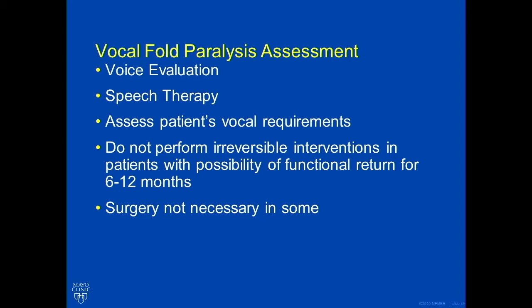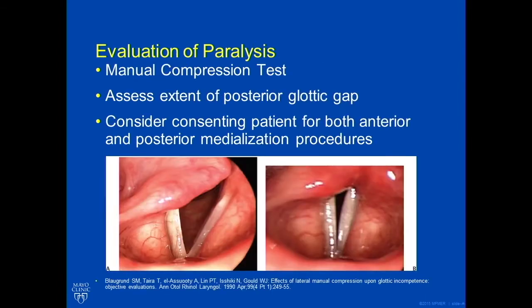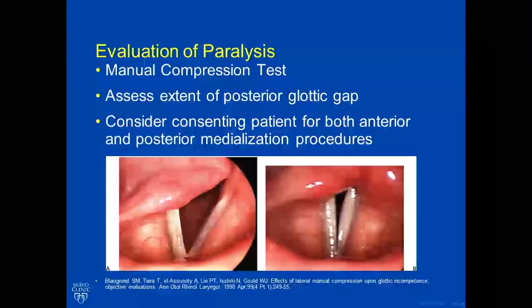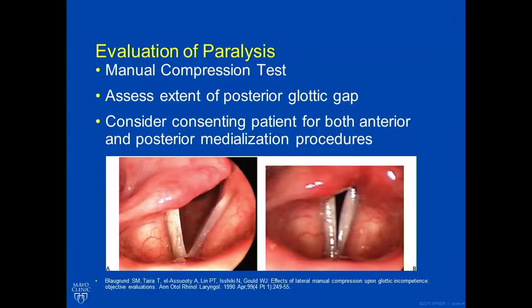There's a chance that the nerve may come back — typically we give up to twelve months. Also, surgery is not necessary in some patients. When we're evaluating for vocal fold paralysis, some of the things I do in the office include the following.